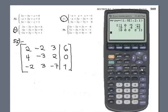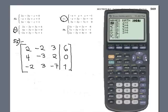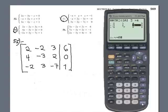Ok, second matrix, editor. Select the matrix A, here's the first one. 3 by 4 and the numbers are 2, minus 2, 3, 6, 4, minus 3, 2, 0, negative 2, positive 3, negative 7, and 1.